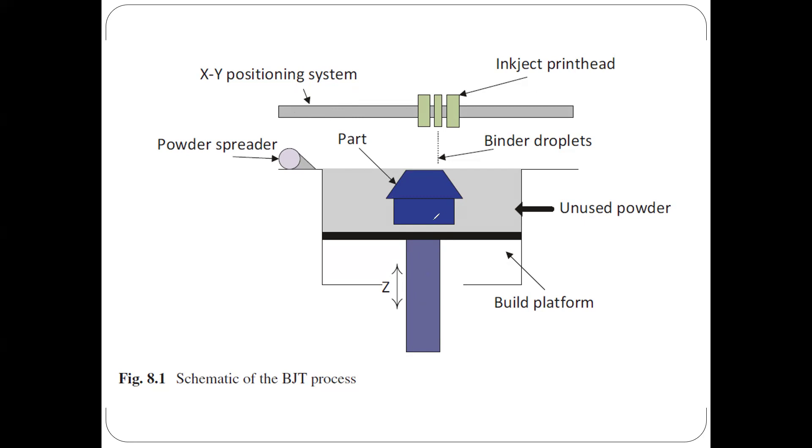If you check, for example, the inkjet print head is shown here where the deposition of binder droplets is shown in the schematic illustration. This print head can move technically in the X-Y positioning system. On this side you'll see there's a powder spreader.